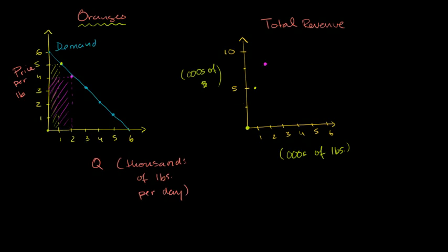And then we can keep going. If the price is $3 per pound, I can sell 3,000 pounds. My total revenue is this rectangle right over here — three times three is $9,000. So if I produce 3,000 pounds, I can get a total revenue of $9,000. Then if the price is $2 per pound, I can sell 4,000 pounds. My total revenue is 2 times 4, which is $8,000. So if I produce 4,000 pounds, I can get a total revenue of $8,000 — even with that previous point right over there.